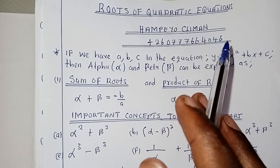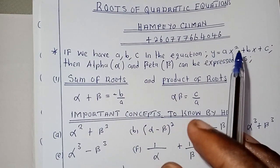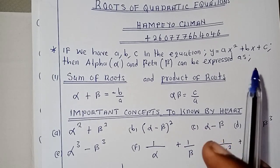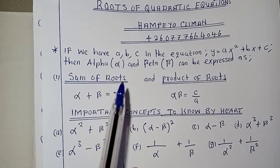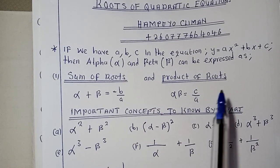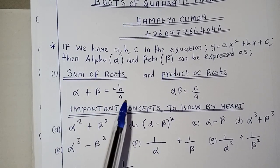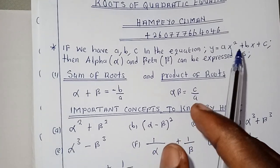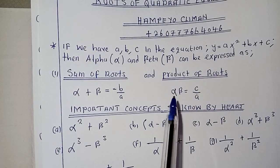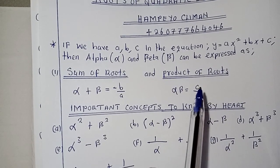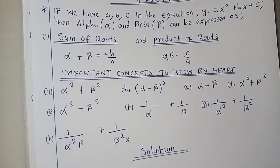Roots of quadratic equations. If we have a, b, c in the equation y = ax² + bx + c, then alpha and beta can be expressed as the sum of roots and the product of roots. The sum of roots is alpha plus beta equals negative b over a. The product of roots is alpha multiplied by beta equals c over a — that is the standard.